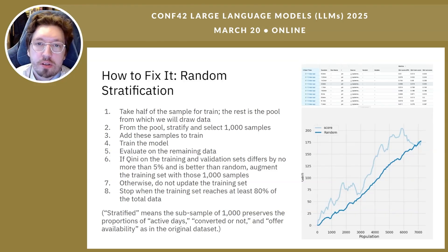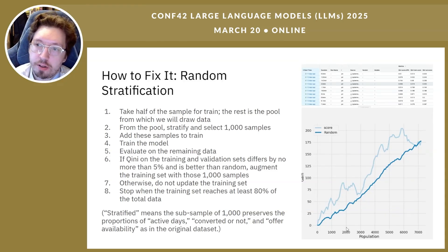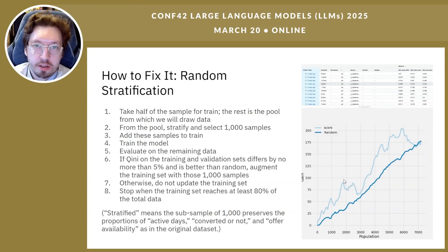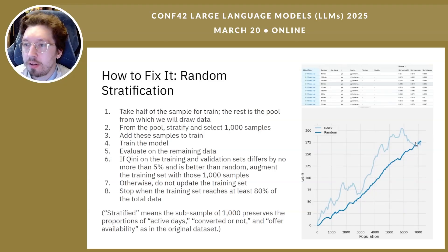This reduced the number of peaks on the graphs — somewhat, down to two peaks. But we still didn't see the desired tight clustering at the top of the ranking and still couldn't choose a clean threshold.